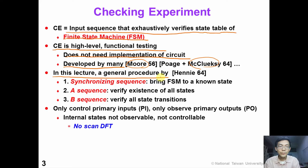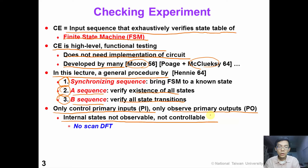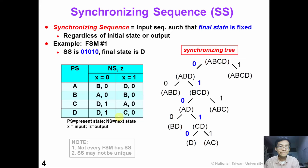In this video, we introduce a general procedure proposed by Haney in 1964. This procedure contains three components. The first is a synchronizing sequence that brings the finite state machine to a known state. The second is an A sequence which verifies the existence of all states. The third is a B sequence which verifies all state transitions. Note that in a checking experiment, we only control primary inputs and observe primary outputs — the internal flip-flops cannot be controlled or observed, meaning there is no scan DFT.